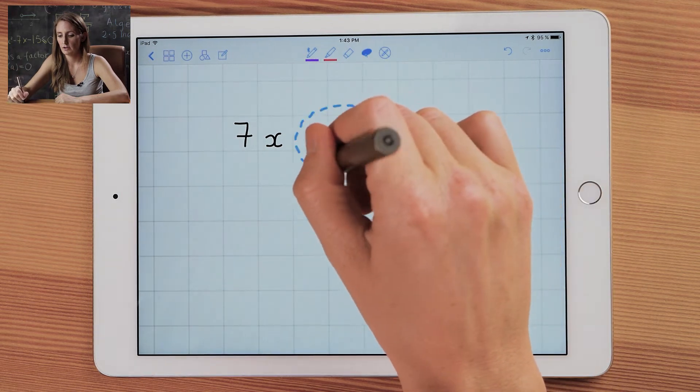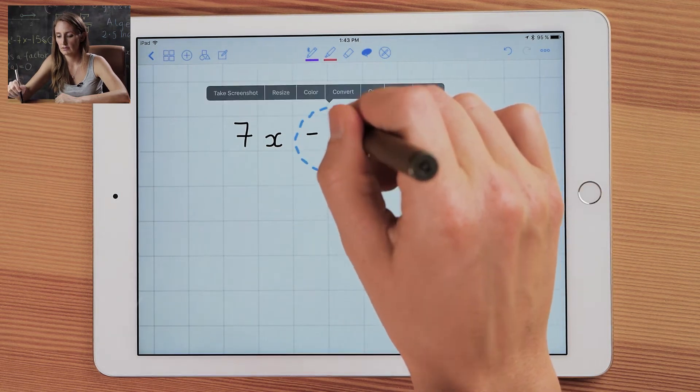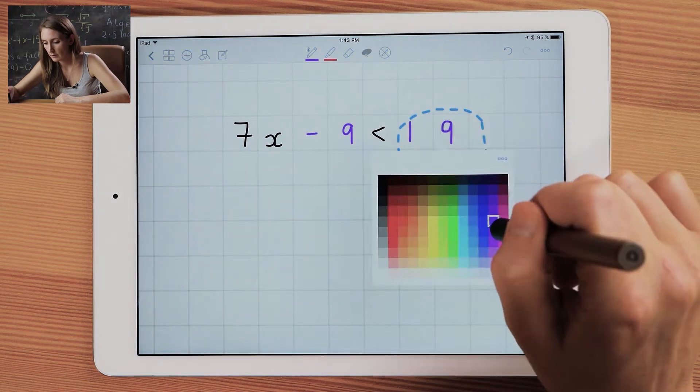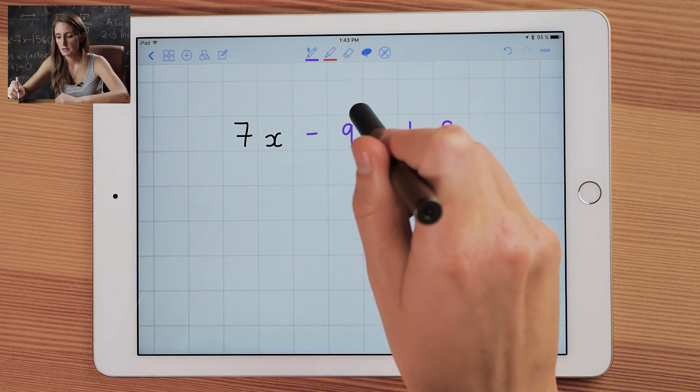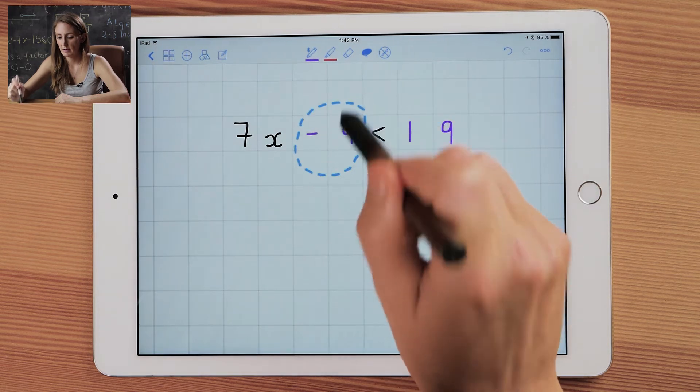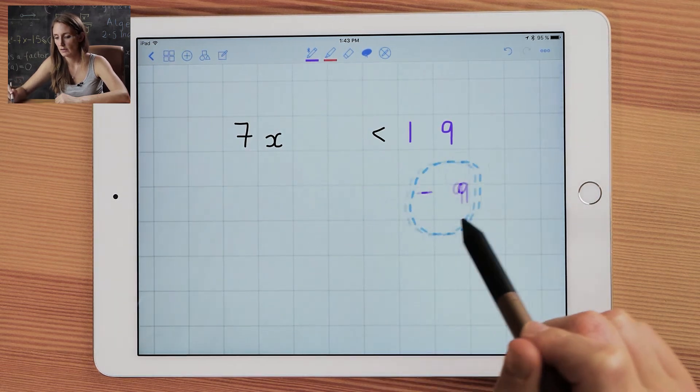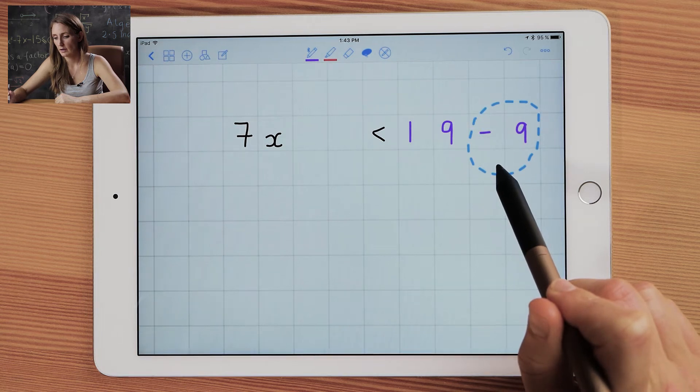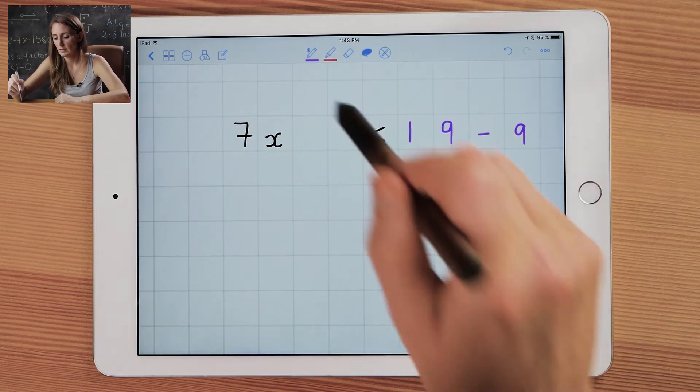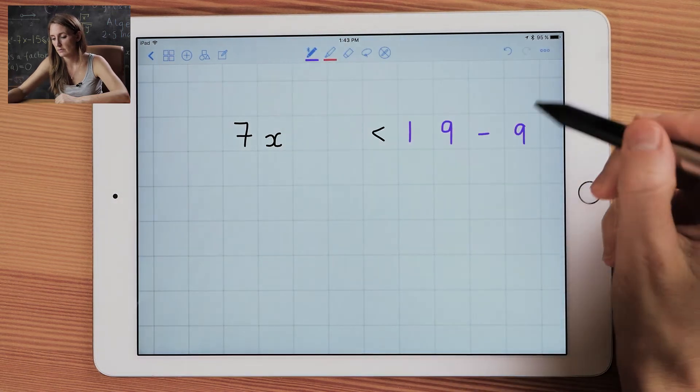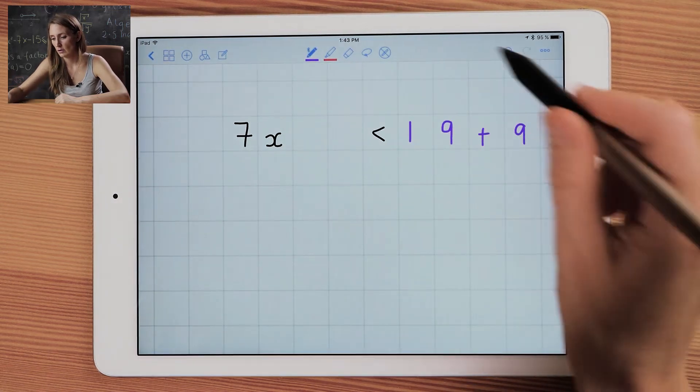What you're going to do is start by taking all of the numbers and put them together so they're on the same side. So here you can see that this minus 9 needs to move on to the other side over here. Now when we move something across the inequality we need to change the sign. So this is a minus so we need to change it to a plus.